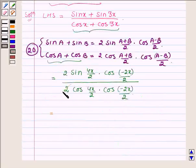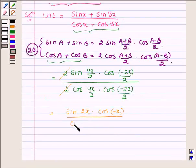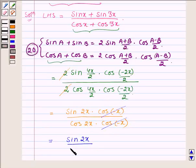Now 2 cancels out with 2 and in the numerator we have sin 2x to cos of minus x upon cos 2x and here cos minus x. Now cos minus x is common in the numerator and denominator, on canceling we have sin 2x upon cos 2x.